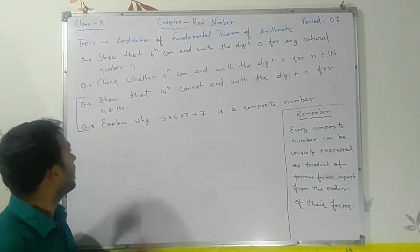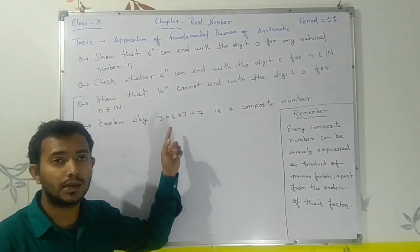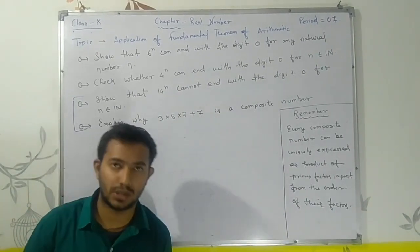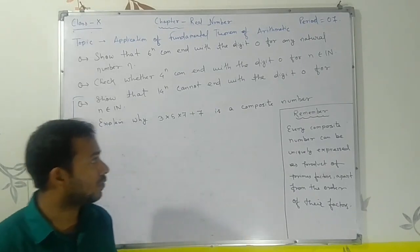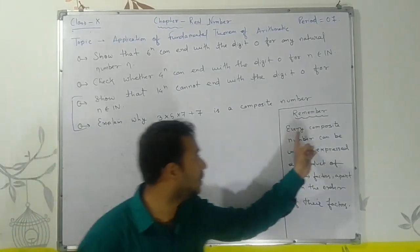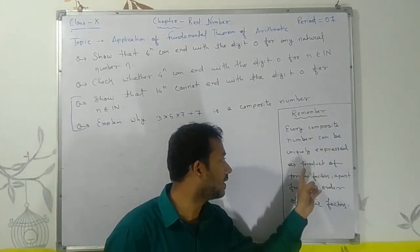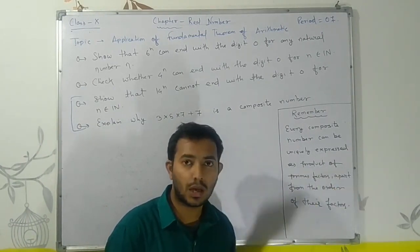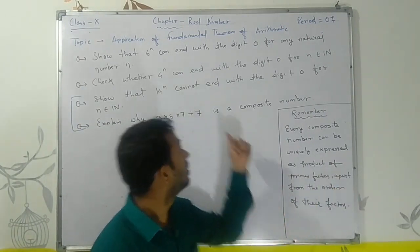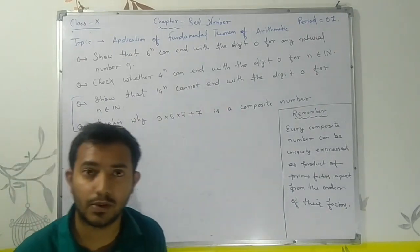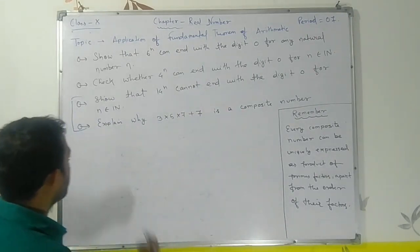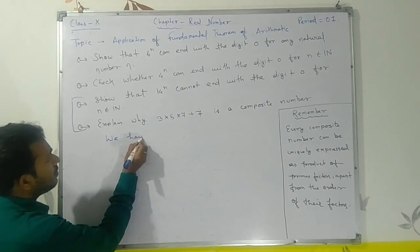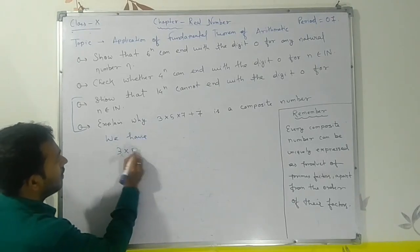The first problem asks: explain why 3×5×7 + 7 is a composite number. Remember, every composite number can be uniquely expressed as a product of prime factors, apart from the order of the factors. Remember this — it's the Fundamental Theorem of Arithmetic.